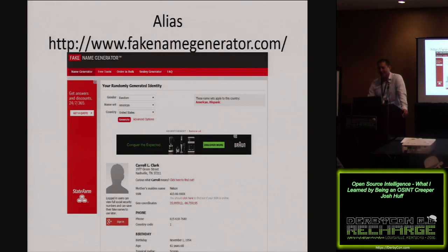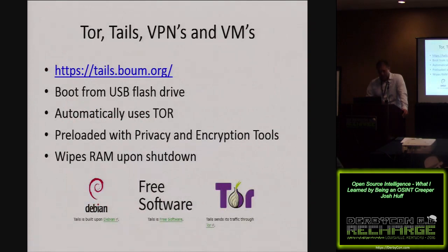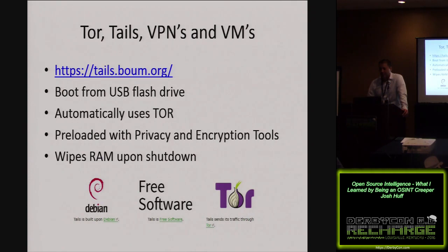Fakenamegenerator.com is an excellent source to create a sock puppet account. It'll give you a name, a mother's maiden name, an occupation, and you even get a burner email account you can use with this information. So you cover who you are. Cover where you come from — Tor, Tails, virtual private networks, and VMs are great for this stuff. Tails is one of my favorites: it's a live operating system that you boot from a flash drive, it automatically uses Tor through the network, it's preloaded with privacy and encryption tools, and when you shut it down, it wipes the RAM from the system. Being a forensic analyst, that's kind of cool to see. And it's also free.